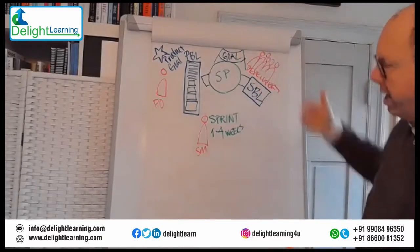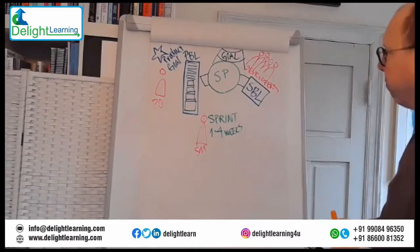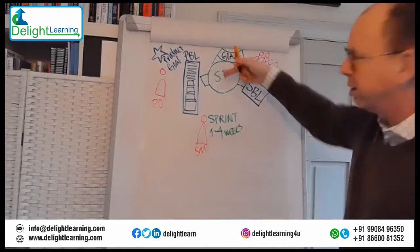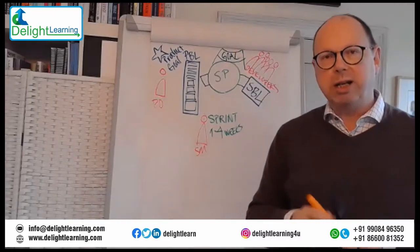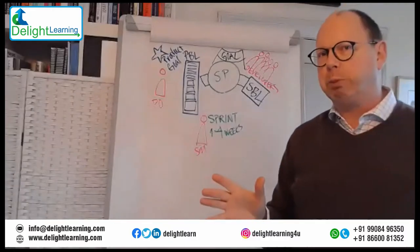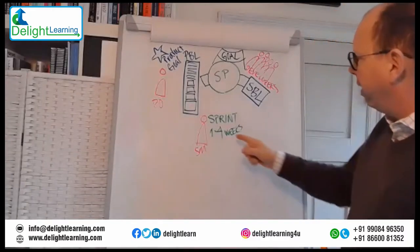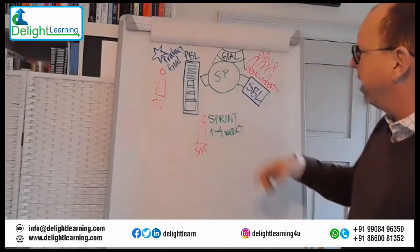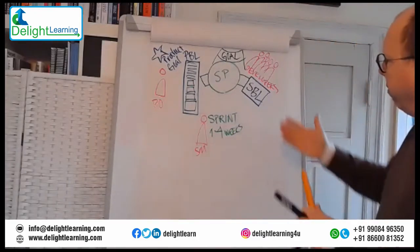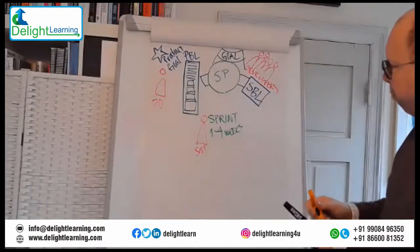The commitment for the sprint backlog is the sprint goal. When we have finished our sprint planning — which is a time-boxed event on the first day of the sprint, maximum eight hours for a one-month sprint and shorter for shorter sprints — and we have a sprint backlog, then we have a plan for the sprint.